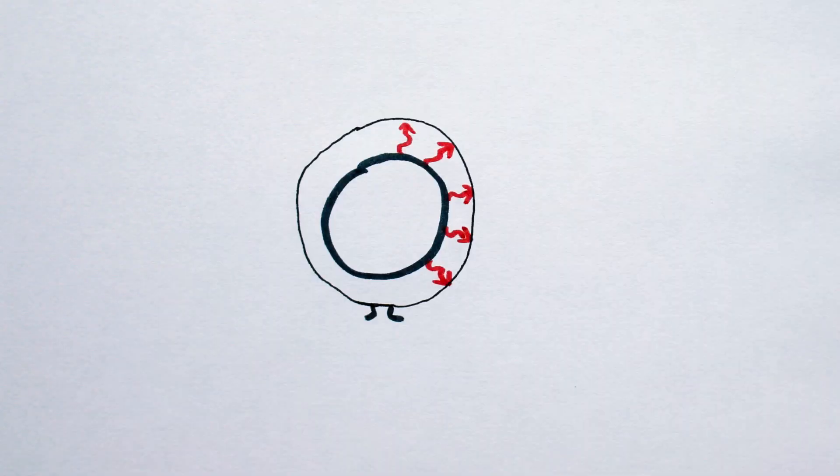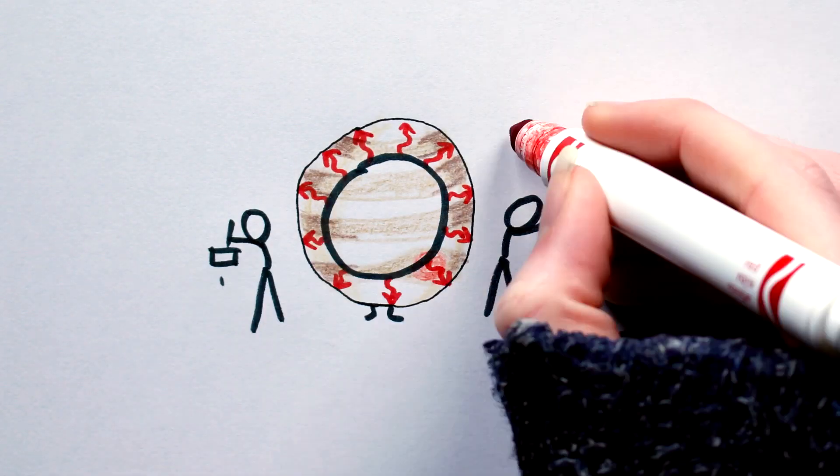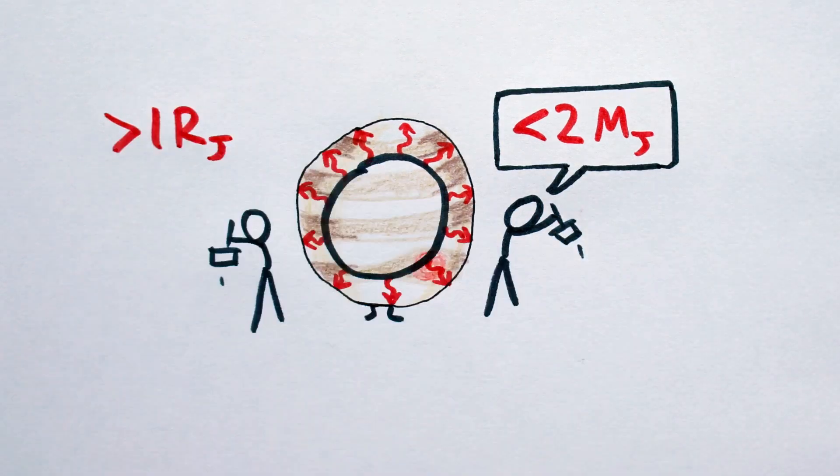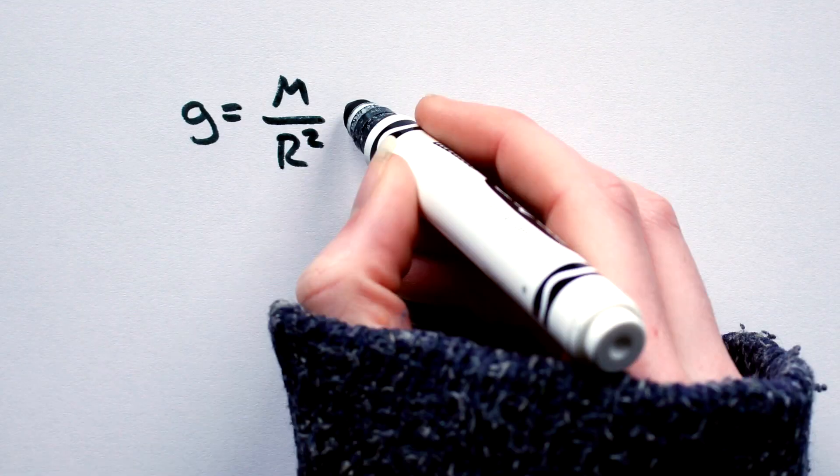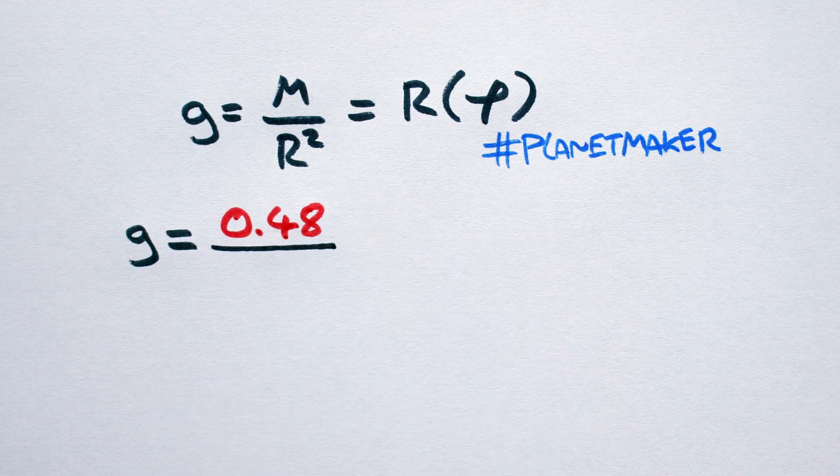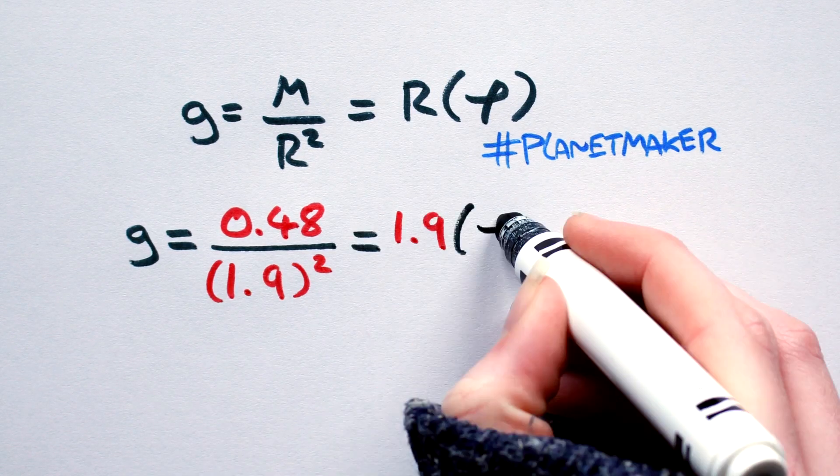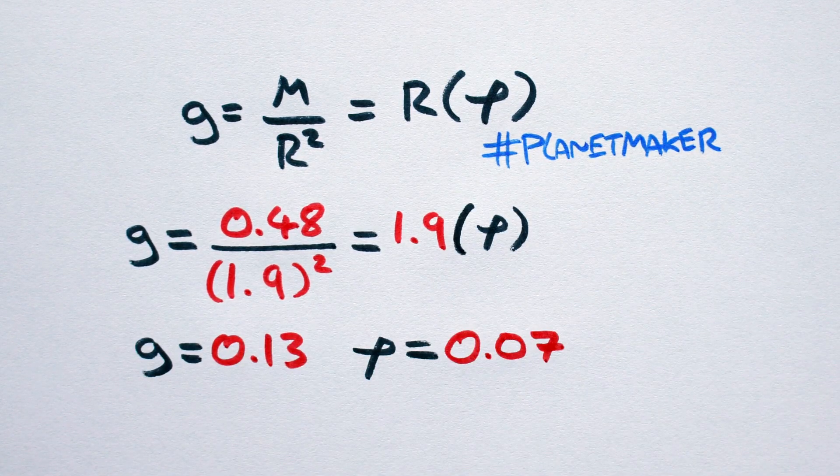And now for something completely different. Let's build a puffy giant planet, i.e. a planet below two Jupiter masses, but with a radius larger than Jupiter. So, I'll set my mass at, say, 0.48, and my radius at 1.9. Again, plug the values into the planet maker, solve for gravity and density,